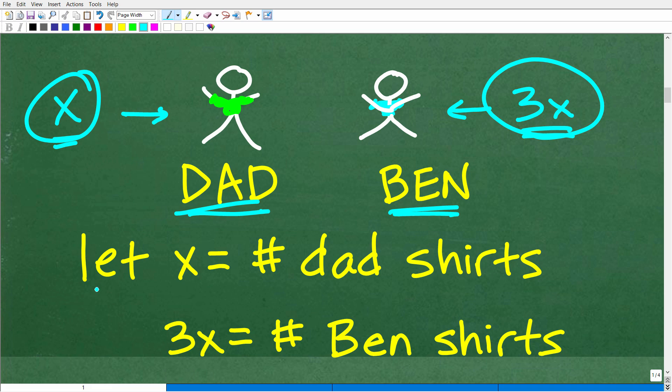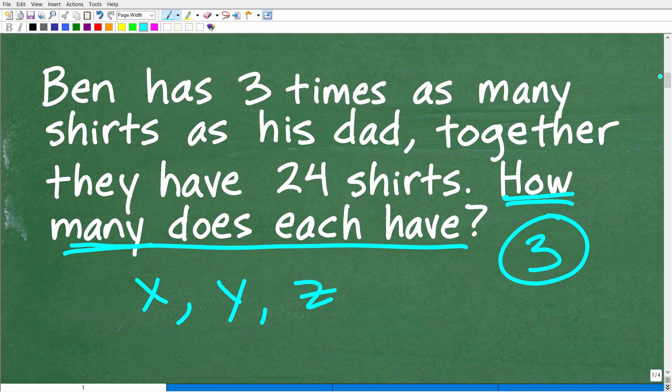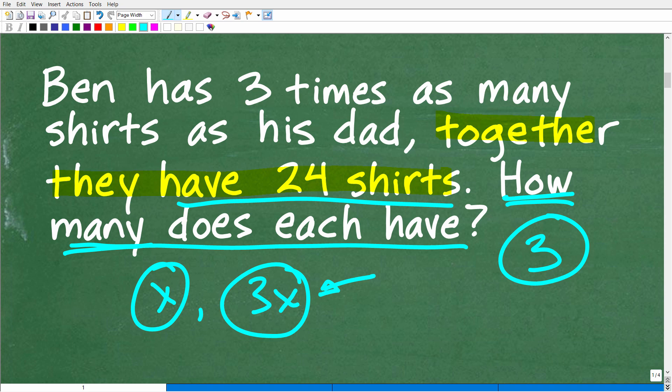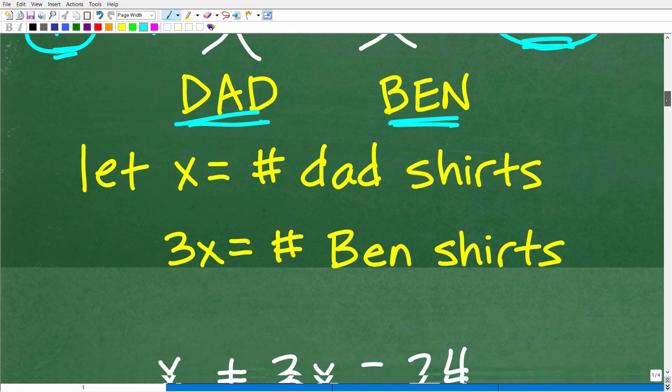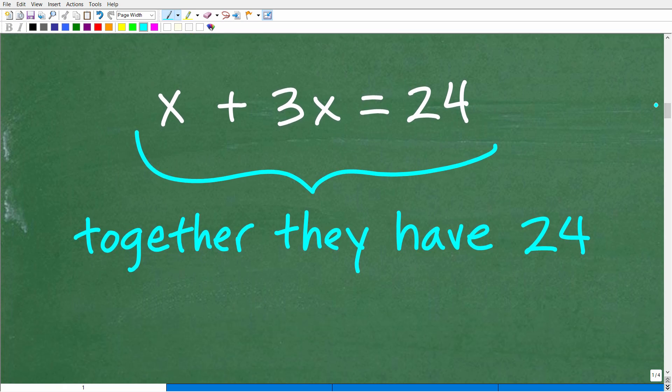We'll go ahead and establish these variables right now. Let X equal the number of shirts that dad has and 3X equals the number of shirts Ben has. Now, we have to go back to the problem because it doesn't do us any good just to have these variables. We're looking to solve what these amounts are, but we can't determine the value of a variable unless we can construct an equation.